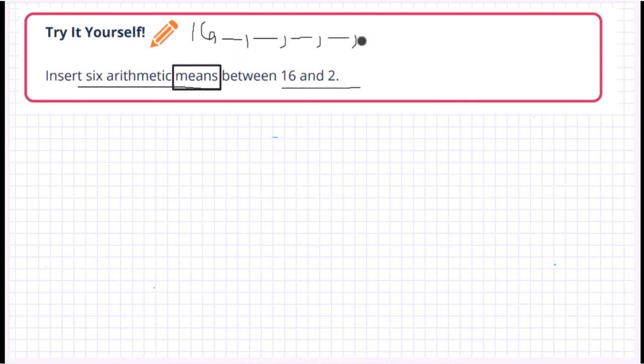So we may put six blanks because it's in between. One, two, three, four, five, six and then you have the last term which is two. Now to get it we just identify these two given numbers which will be our first and last term in the given sequence. So emphasize that this is your first term and this is our end term or the last term which is also equivalent to the eighth term or the a sub eight.